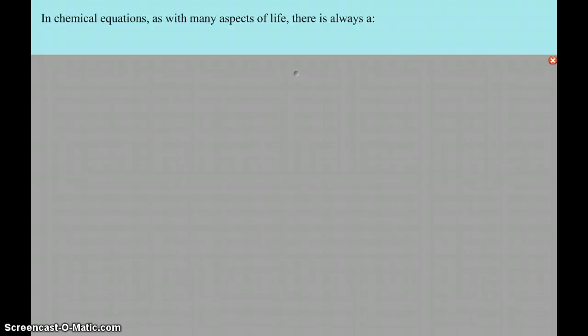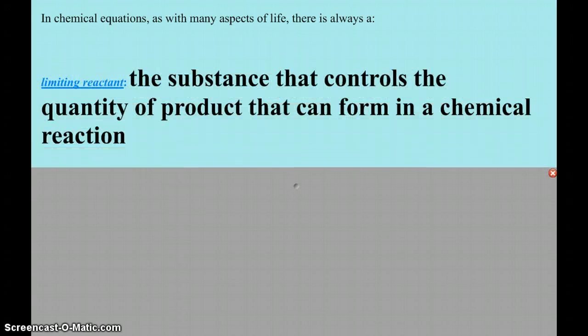The last topic we're going to tackle here with stoichiometry is limiting reactant. We've mentioned this before in the lab, but the limiting reactant is the substance that controls the quantity of product that we can make in a chemical reaction. When one of the reactants is all gone, the reaction stops and no more product can be made.